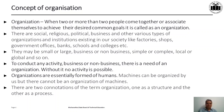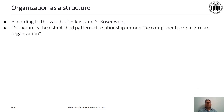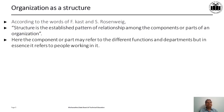Organization as a structure: according to F. Cast and S. Rosenbeek, structure is the established pattern of relationship among the components or parts of an organization. You establish a relationship with a particular pattern among the components, thereby creating a structure. These components refer to different functions and departments, but in essence they refer to the people working in the organization — how they are arranged and positioned.